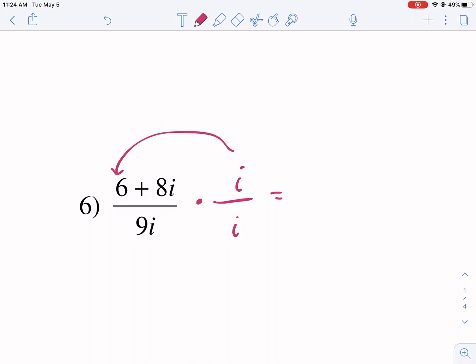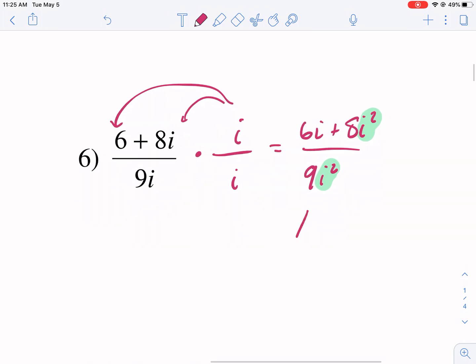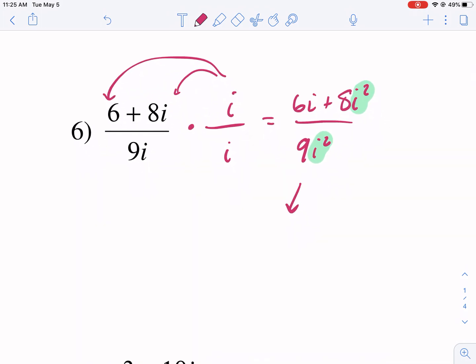So now let's multiply the top. We have to distribute this to both. We have 6i plus 8i squared. An alarm should be going off. We have an i squared over 9i squared. We have another i squared here. So what we're going to do first is we're going to change these i squareds.